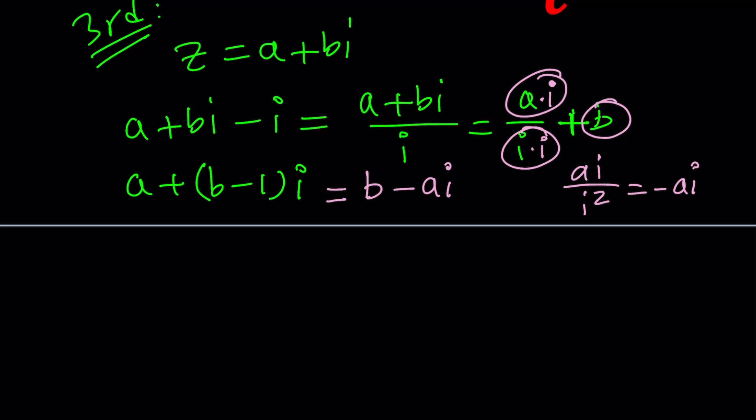Now we have the equality of two complex numbers, and that means the real parts are equal. First, A equals B, and the imaginary parts are equal. So B minus A must equal negative A. B minus 1, I mean B minus 1 equals negative A.